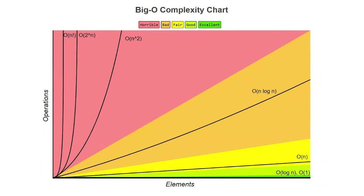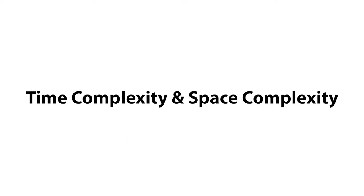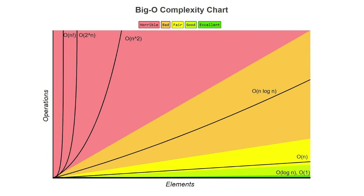Now it's time to cover some serious stuff. This video is about time and space complexity. This stuff is important because this is basically how you're going to measure how good an algorithm is. And I mean it's the most important thing — if you don't understand this, you won't be able to do anything after this. So it's really important that you guys understand this.